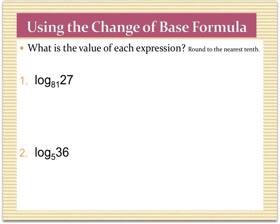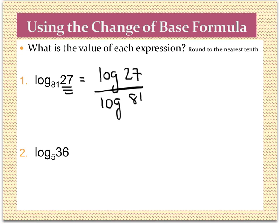Let's rewrite these using the change of base formula. We always write this argument on top — so log of 27 over log of 81. The bases here are 10 because I'm doing the common log. Now I can go to my calculator and type in log of 27 divided by log of 81 — that's common log in the calculator — and I get 0.75. So I was able to find the value of the expression without doing an equation.